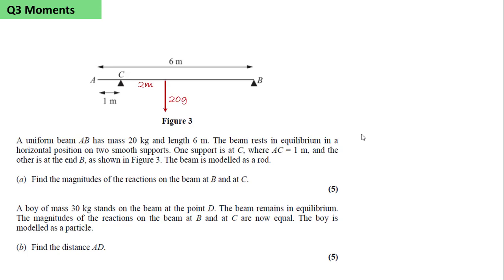The beam rests in equilibrium in a horizontal position on two smooth supports. One is at C, where AC equals 1m, and the other is at B, as shown in figure 3.